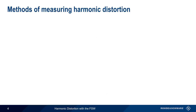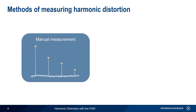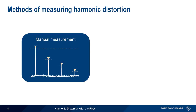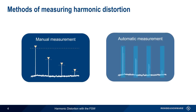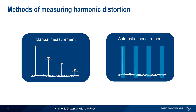There are two ways of measuring harmonic distortion on the FSW. The first is measuring the harmonics manually using markers. The second is using the FSW's automatic harmonic measurement function. Let's start by explaining the manual process.